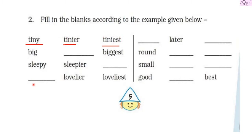We have to change all these adjectives into three forms. The first one has already been done for us — that is 'tiny.' The comparative degree form is 'tinier,' and in the superlative degree we use 'tiniest.'